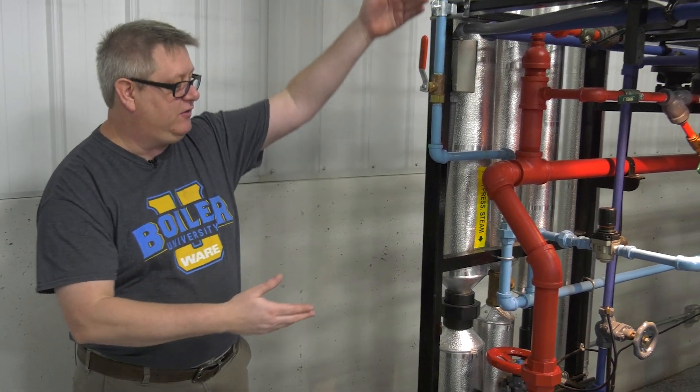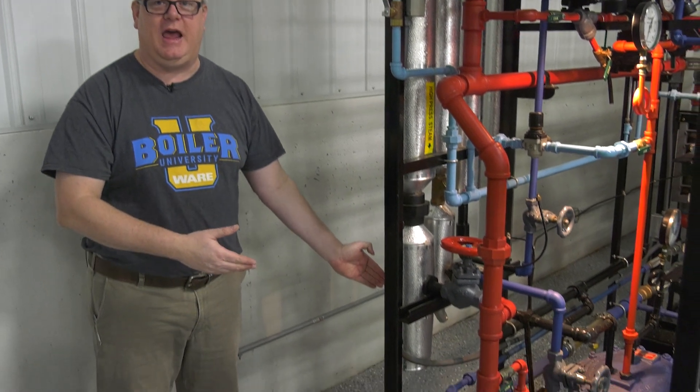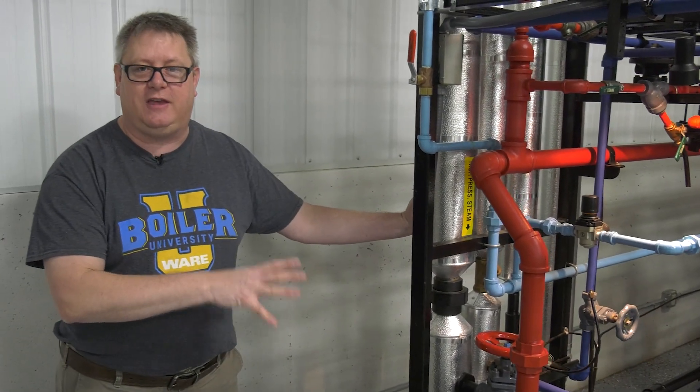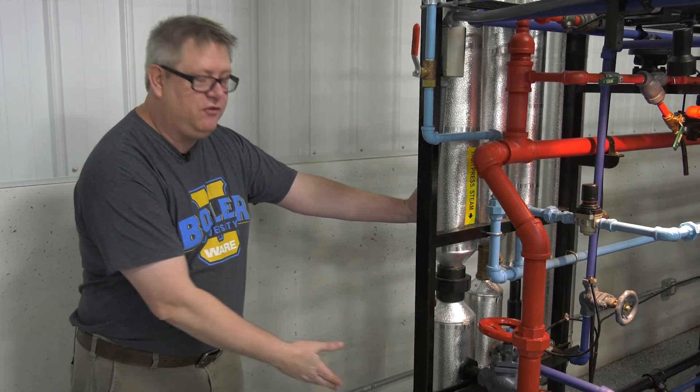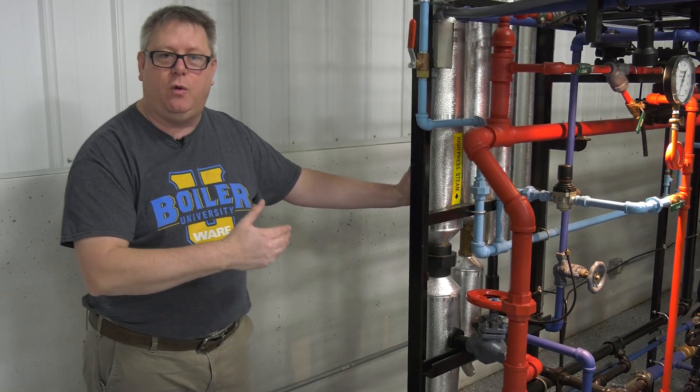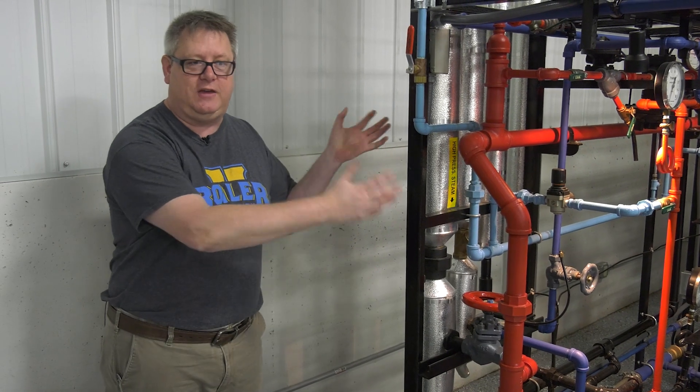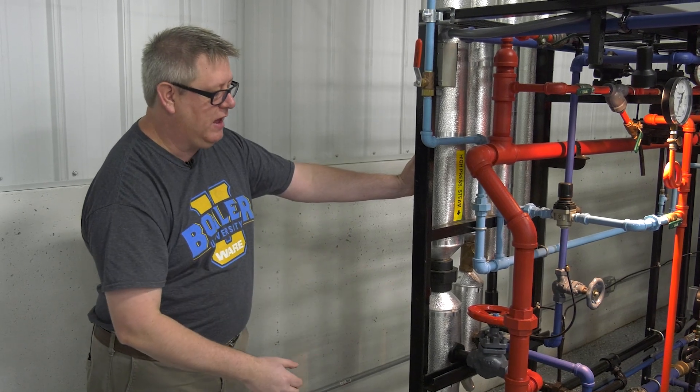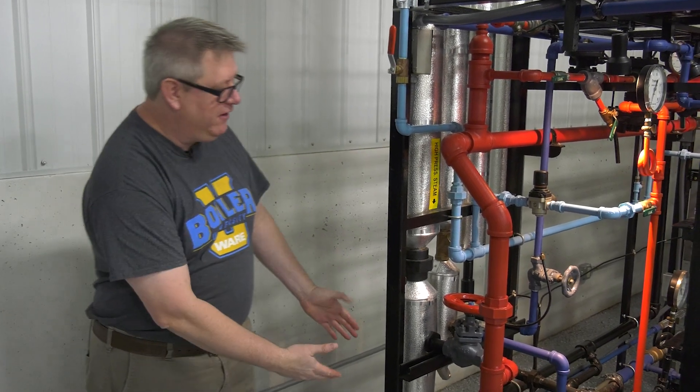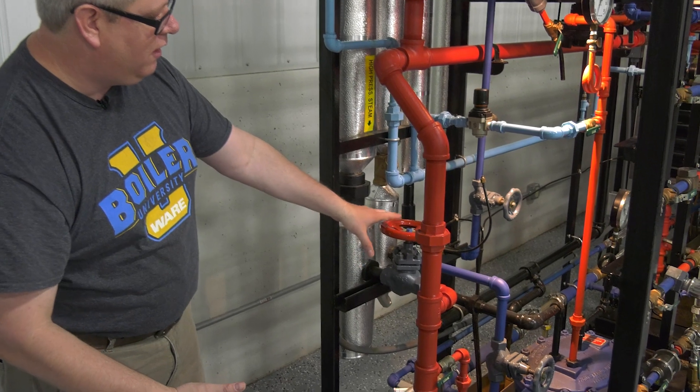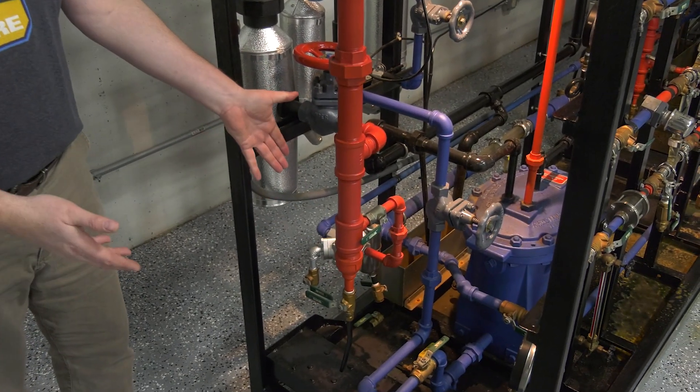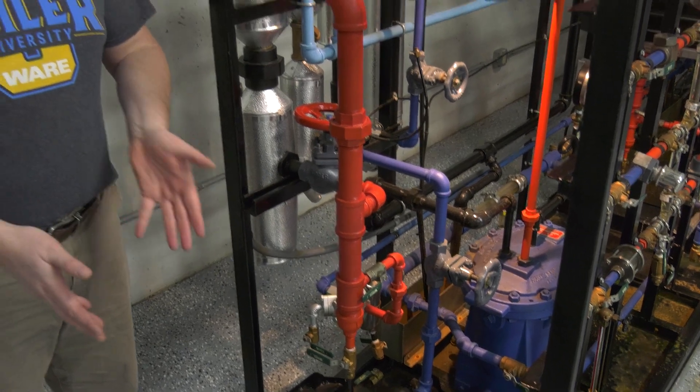Right here we've got a steam main dropping down to our trap demonstration skid, and this is a perfect location for a drip leg because we don't want to pull a lot of condensate into this skid. What we have here is our valve to control the steam going in and a section of pipe that goes down, and that is the drip leg.